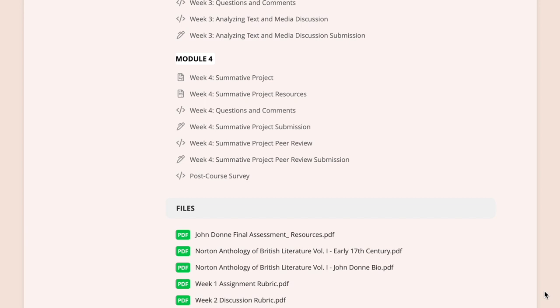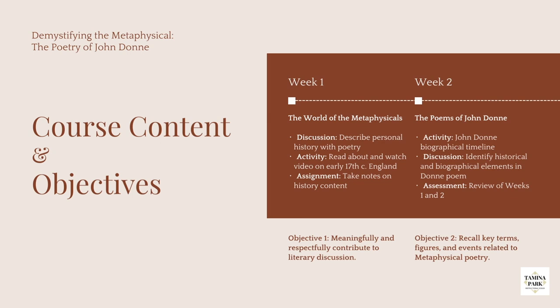There's also a section with various files that students can access containing some of the more important documents for the course. The course consists of four objectives that can be roughly mapped onto each of the four weeks, although the objectives do show up across multiple weeks often. Each week focuses on a single theme — the first one being the world of the metaphysicals, aligned with objective one. Week two goes into the poems of John Donne, allowing students to review everything they've learned and show it through an assessment at the end of that week.